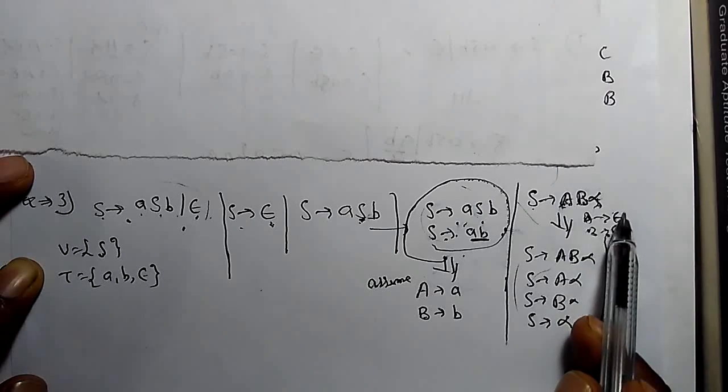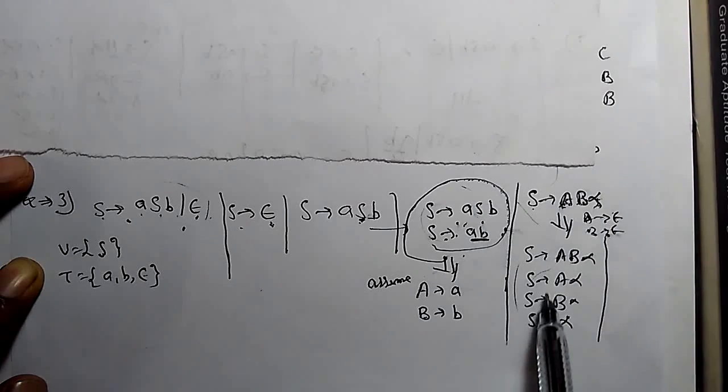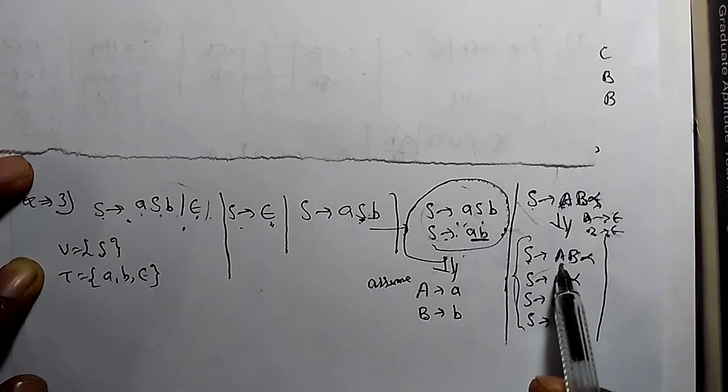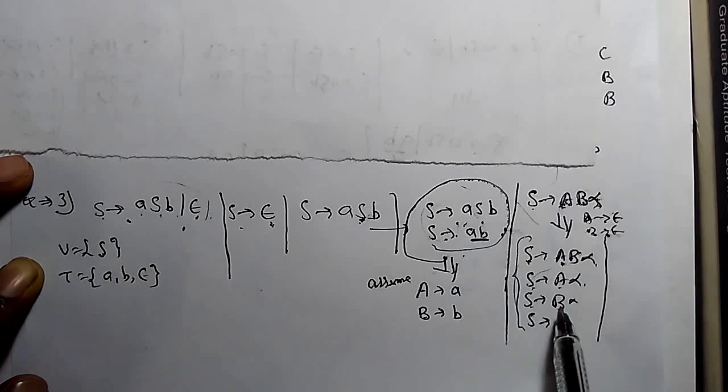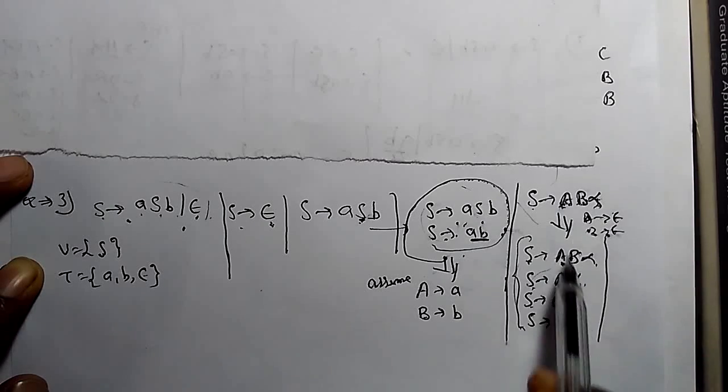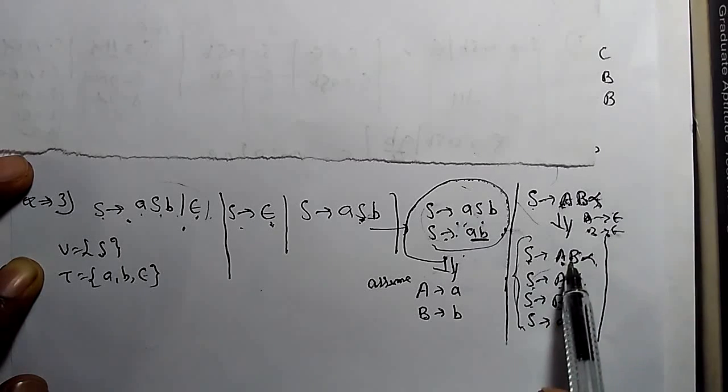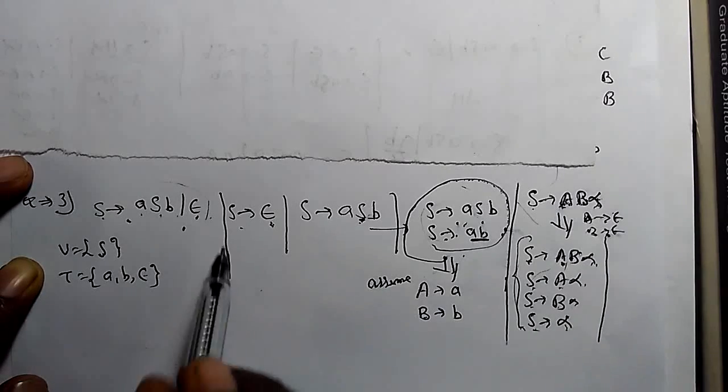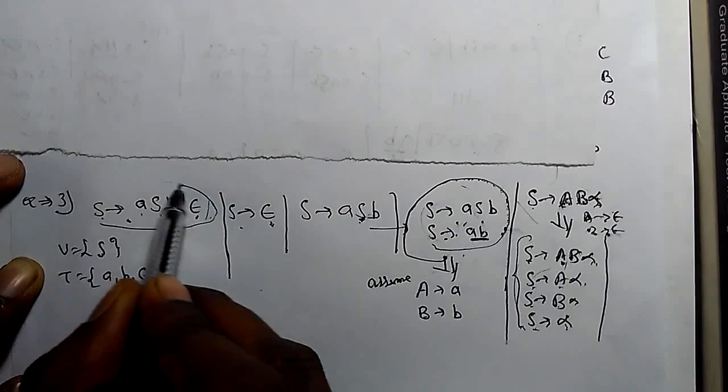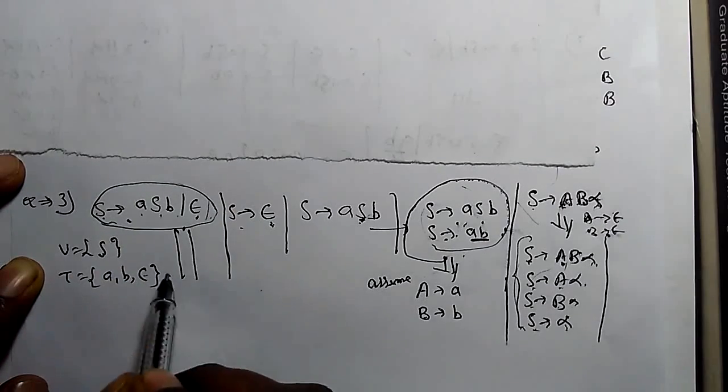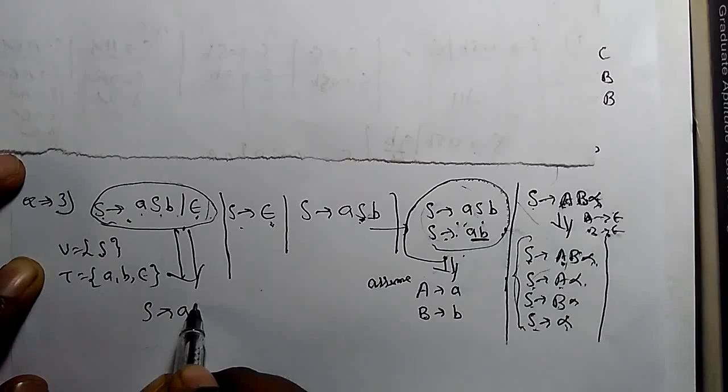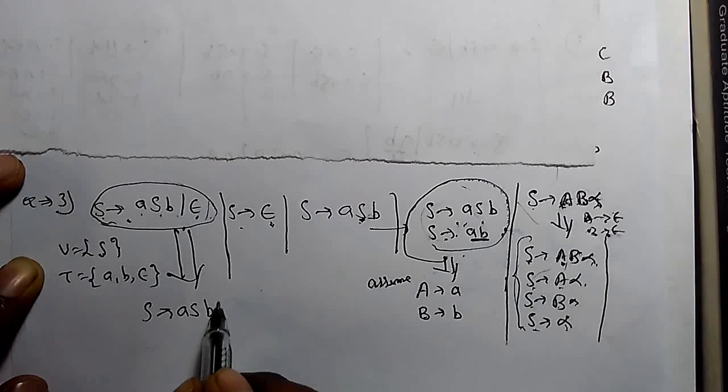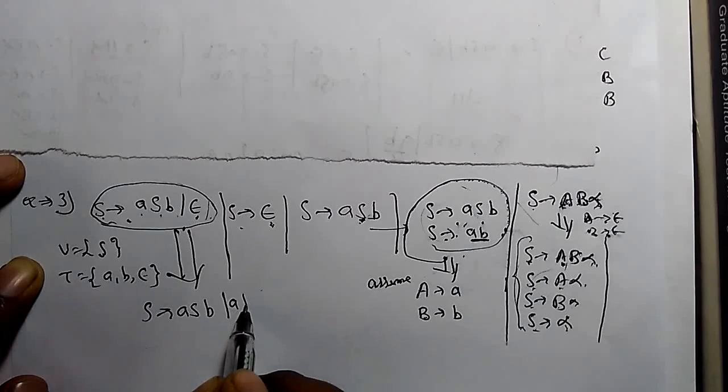After the null removal, the equivalent grammar would be S derives ASB or S derives AB. With all the combinations of AB should be attached with alpha and one derivation of alpha. So after epsilon removal, the grammar would be S derives ASB or S derives AB.